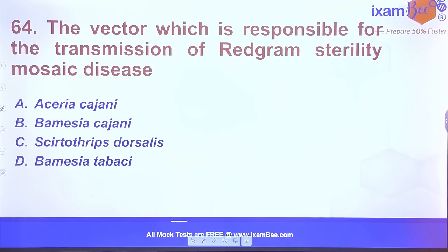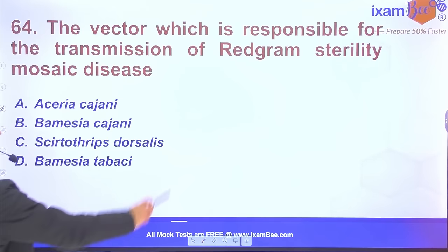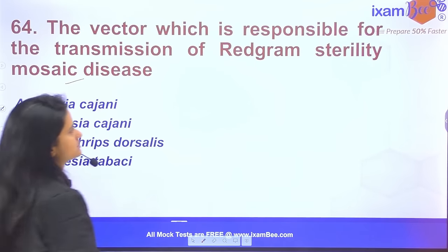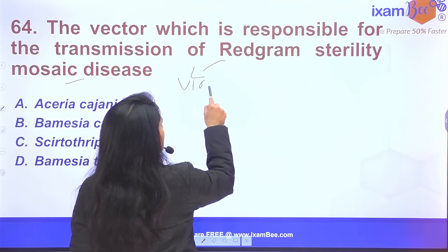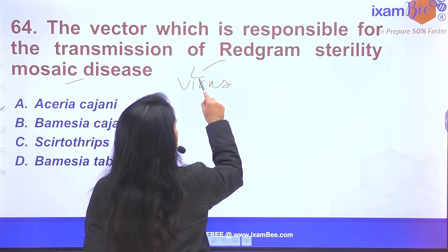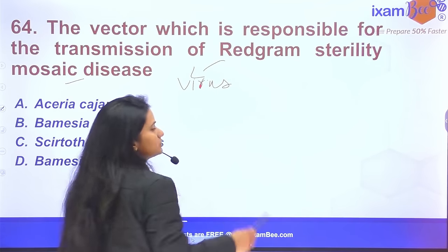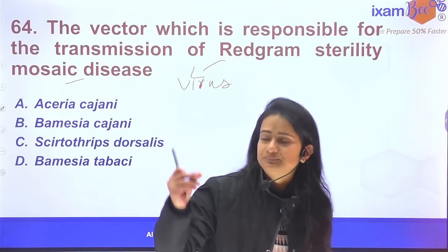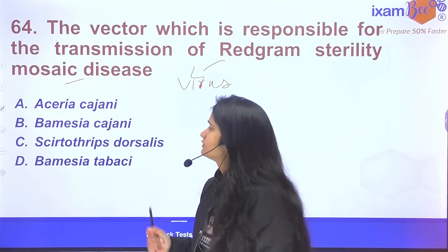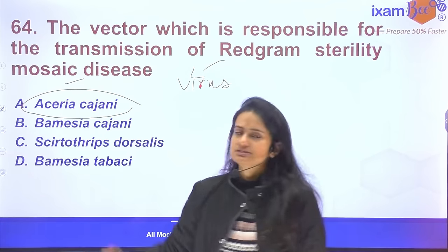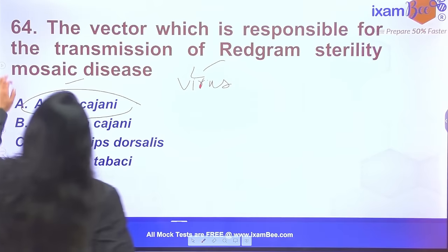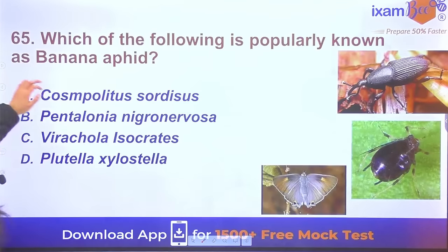Question 64: The vector responsible for transmission of red gram sterility mosaic disease — viral diseases always require a vector. The vector for this disease is Aceria cajani, which is basically a mite.